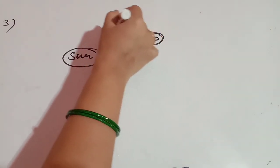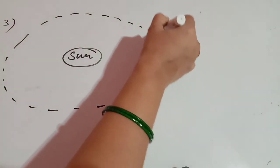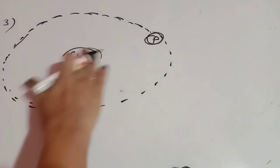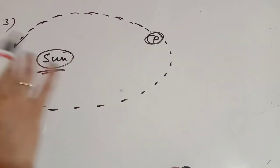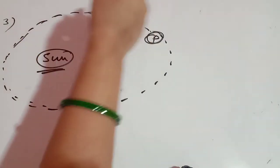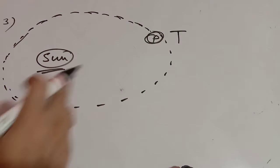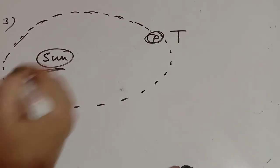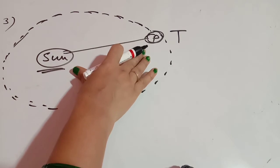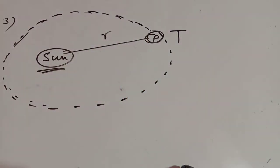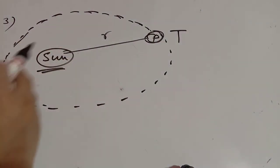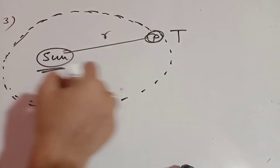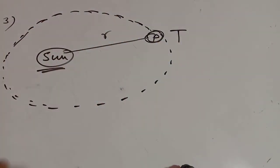For Kepler's third law, the Sun is at one of its foci and the planet moves around it in an elliptical orbit. Capital T is the time taken by the planet to complete one revolution around the Sun. R is the mean distance from the Sun to the planet.